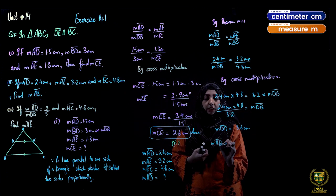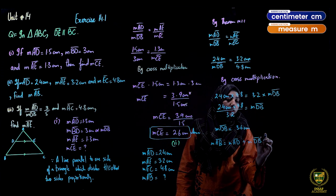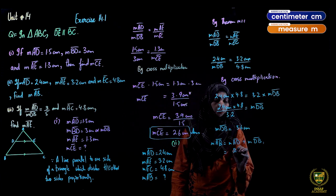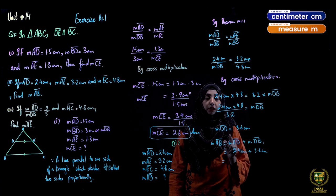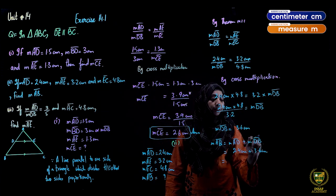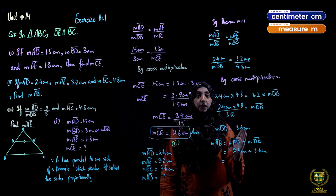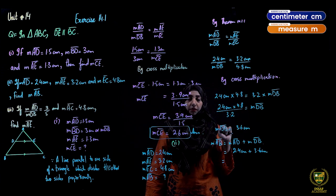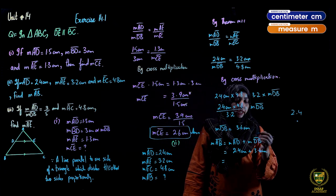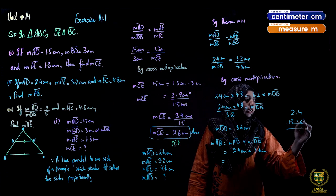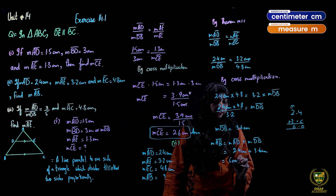Now AB = measure AD + measure DB = 2.4 cm + 3.6 cm. When doing decimal addition by hand, remember to align decimal points properly — the digit after the decimal starts from tenths, not units. So 2.4 + 3.6 = 6 centimeters. That is the answer.